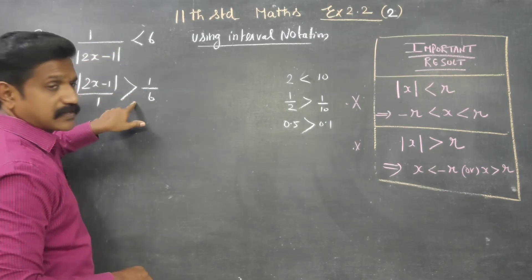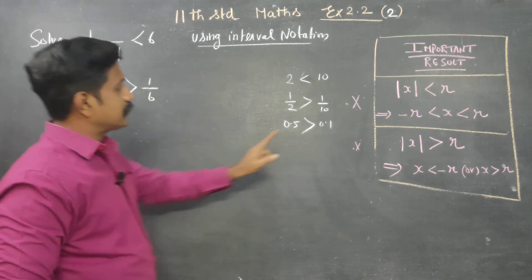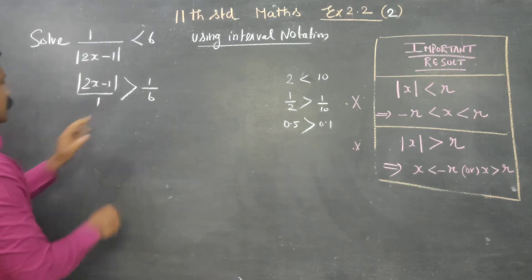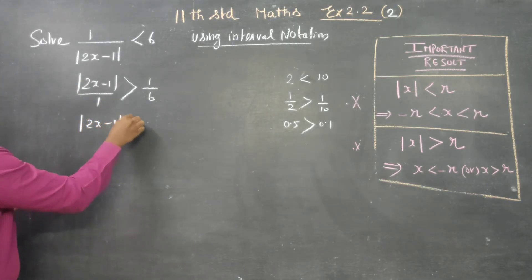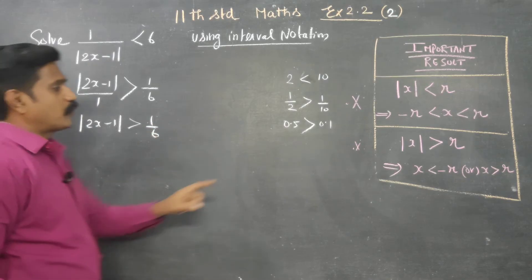Now, if you take the reciprocal, modulus of 2x minus 1 is greater than 1 by 6. What is the rule?